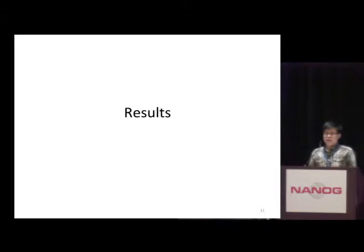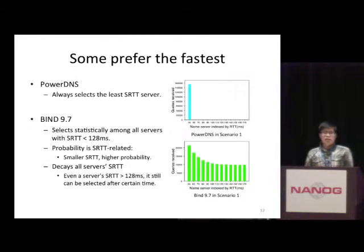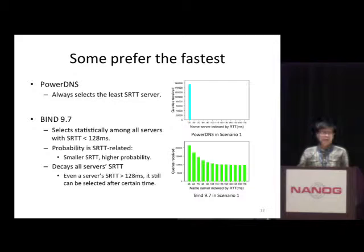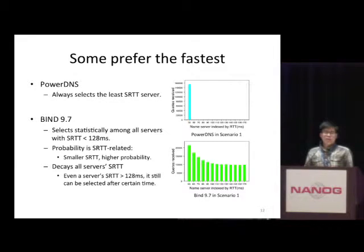We did find some cache resolvers that prefer the fastest name server. In the first scenario measurement result, the graph lists name servers along the x-axis according to their round-trip time — the first name server has the least round-trip time and the last one has the longest. The y-axis shows queries sent to each name server. PowerDNS distributes almost all queries to the fastest name server, though it also queries the others, but the number is very small.